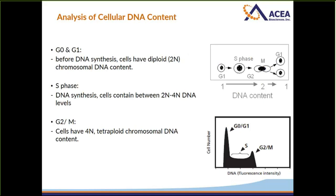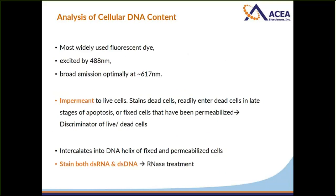The most commonly used dye is propidium iodide (PI). It is relatively affordable, which is why it is used most often. It is excited by the blue laser at 488 nm and emits optimally at 617 nm. PI is impermeant to live cells, so it can be used as a live/dead stain to specifically stain dead cells. However, for cell cycle analysis, you need to fix and permeabilize the cells beforehand. PI stains both double-stranded RNA and double-stranded DNA, so RNase treatment is required to degrade the RNA before staining.